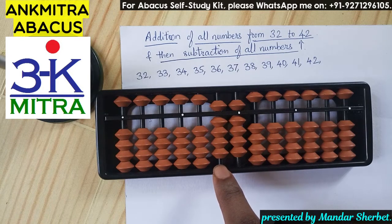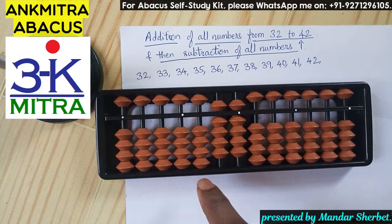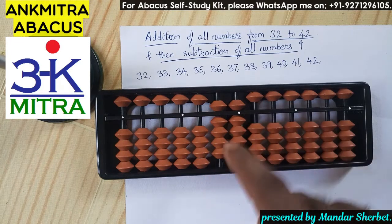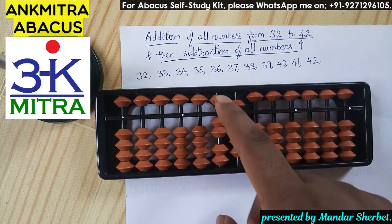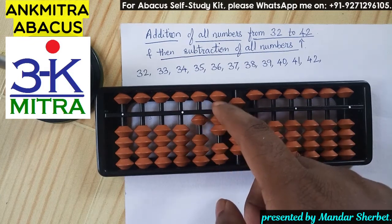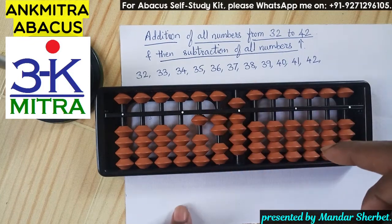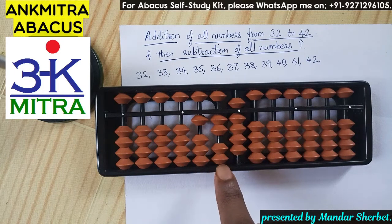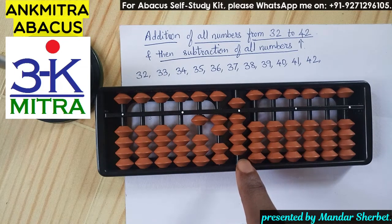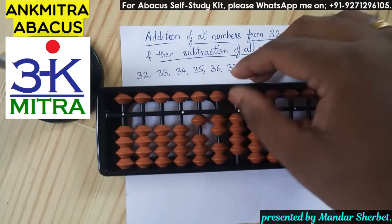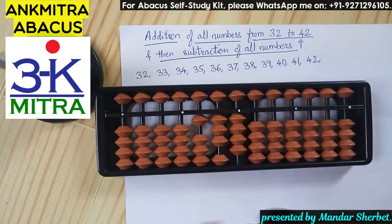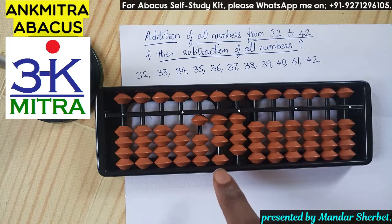Next number is 35. To add 3 on the tens place, I don't have any beads available, so I'll have to use the big friend formula of 3, which is minus 7 plus 10. To add 5 on the units place, I'll also have to use its big friend formula, which is minus 5 plus 10. Addition of 35 is done.